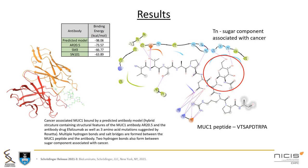Thus far, 180 antibodies have been docked against the cancer antigen and scored using MMGBSA. Of these, a total of 166 antibodies were newly designed structures. A particular computationally predicted model showed the desired recognition for both the TN sugar and the MUC1 peptide region, and reported a binding affinity of negative 98 kilocalories per mole from MMGBSA calculation — a more favorable binding energy than known MUC1 antibodies.